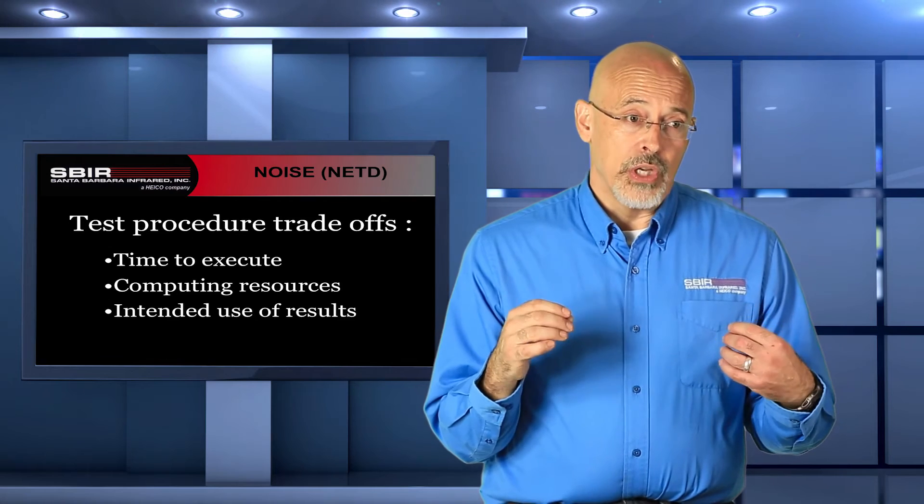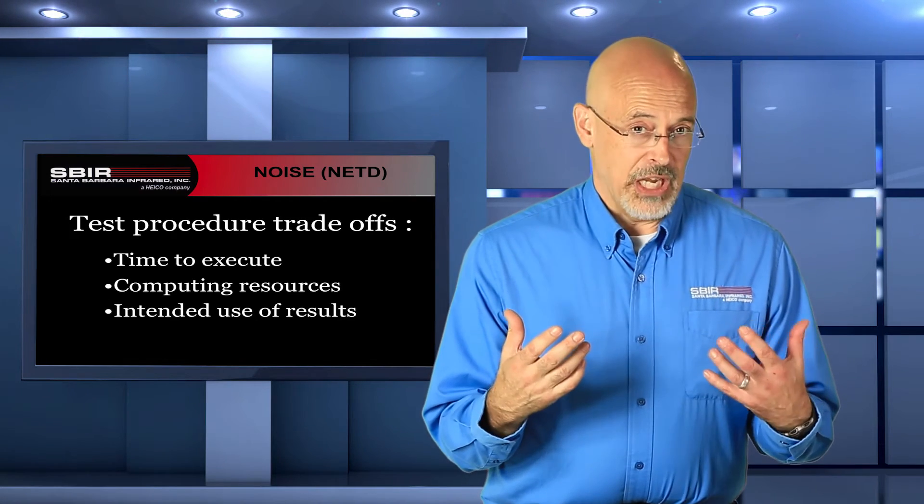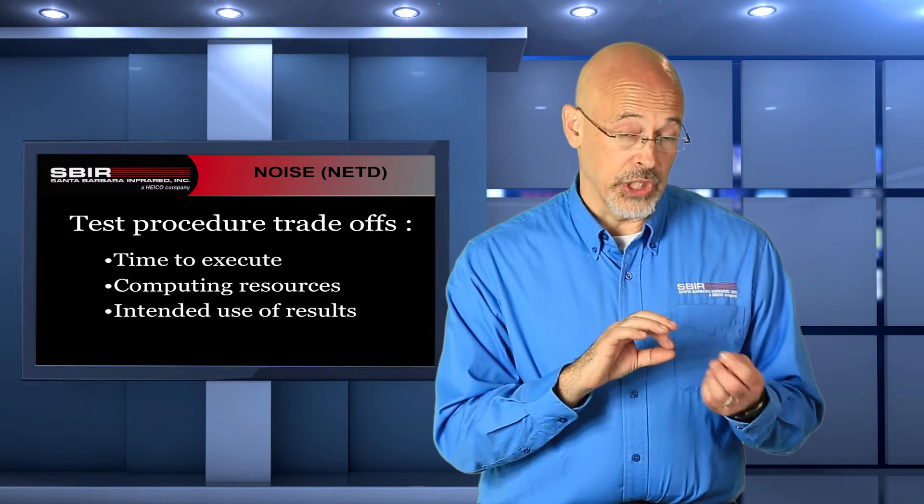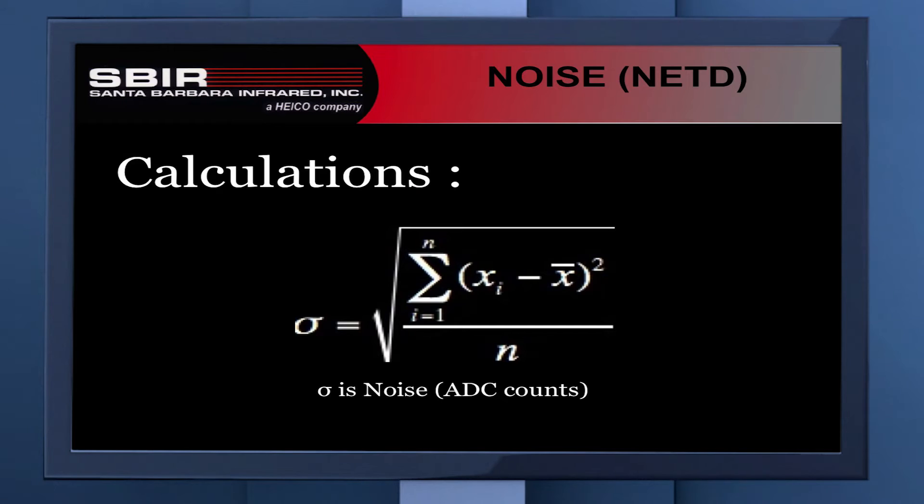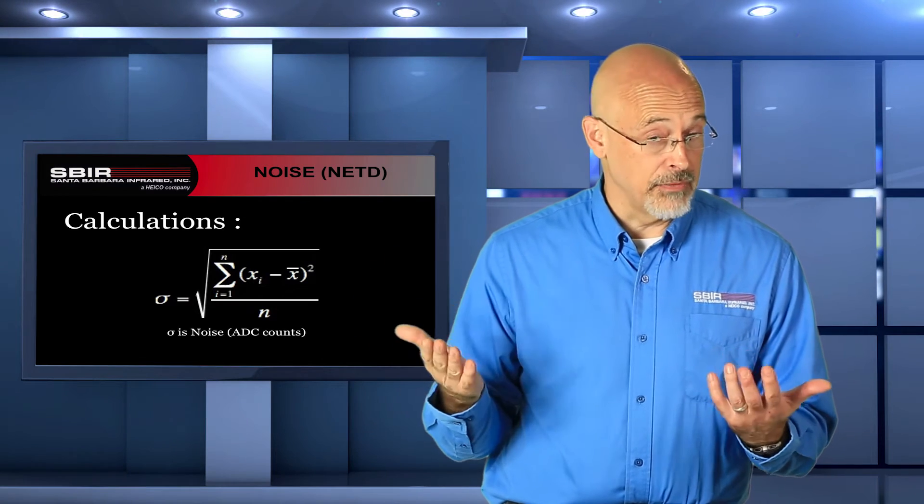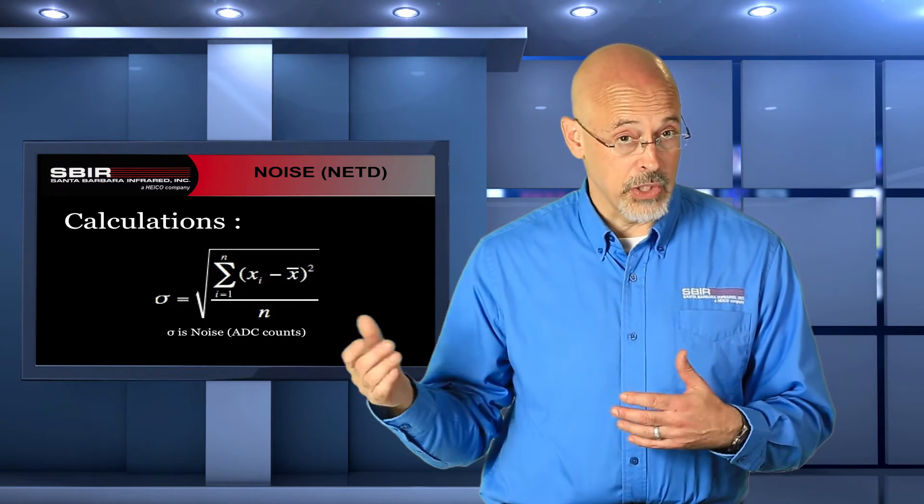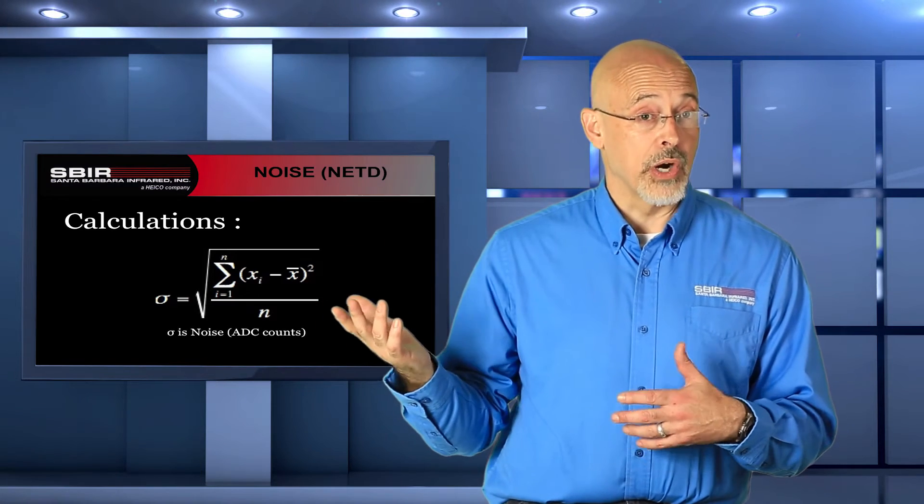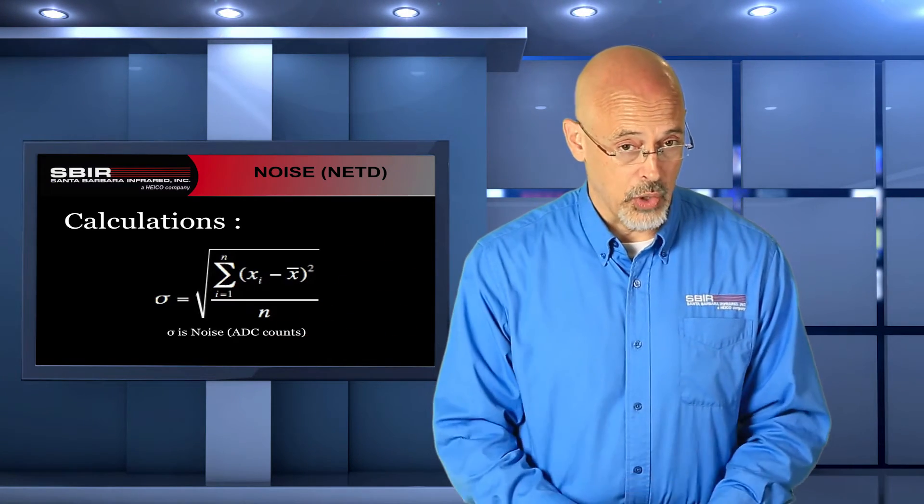Most of our calculations of noise are going to look at a standard deviation. That means we're going to take a series of measurements, and then we're going to look at the variability among those measurements. This formula is our standard way of making a standard deviation calculation from that set of values. The output unit is going to be the same as the input measurement. If we're taking all of our measurements in volts, the output of noise is going to be in volts.